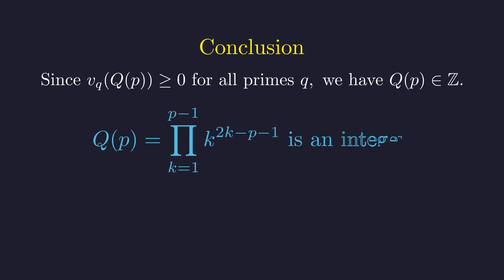Either way, no prime appears in the denominator, so Q(p) must be an integer. That wild product we started with, with all its negative exponents and apparent chaos, is indeed always an integer when p is prime. Mathematics has once again surprised us with its hidden order.